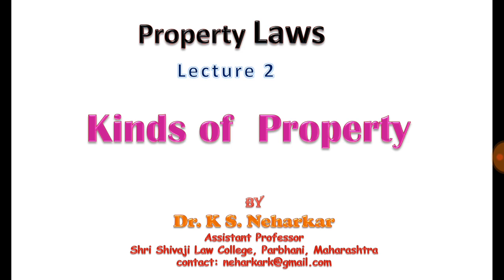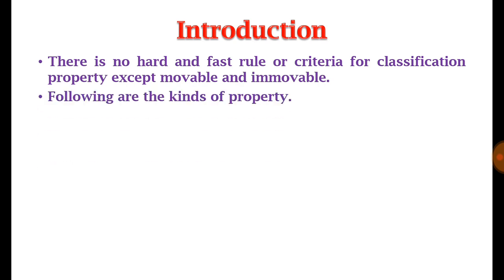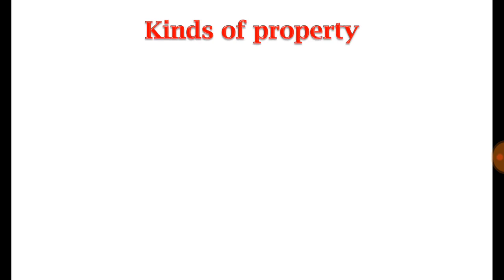Let's start with the lecture. There is no hard and fast rule or criteria to classify properties into various kinds except movable property and immovable property. Properties are categorized on the basis of their nature, tangibility, physical existence, etc. So let me discuss the different kinds of properties. The first kind is corporeal property and incorporeal property.